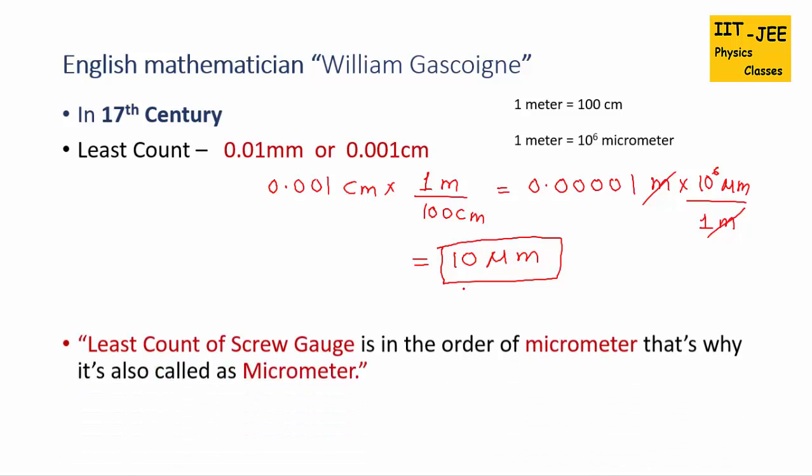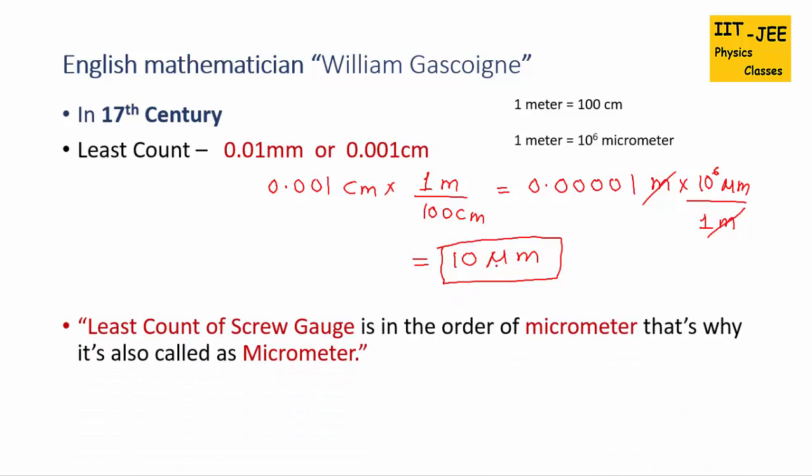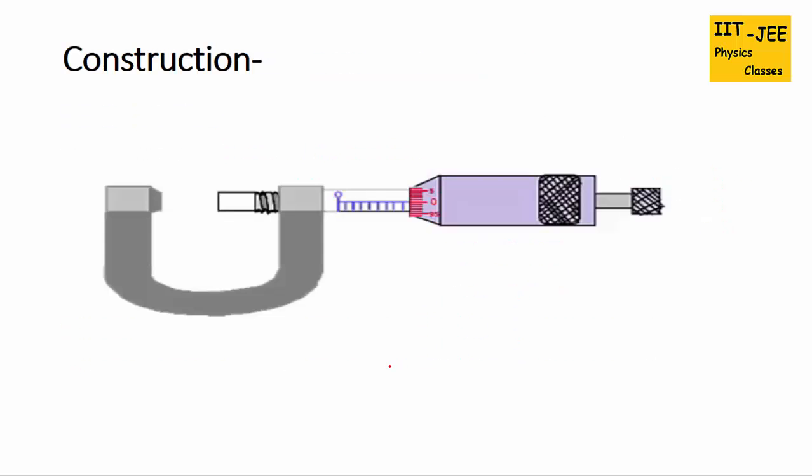You can see least count of screw gauge is in the order of micrometer. That's why it is also called as micrometer screw gauge. So let's discuss construction of screw gauge. Micrometer screw gauge is used to find diameter of wire and also thickness of metal sheet.